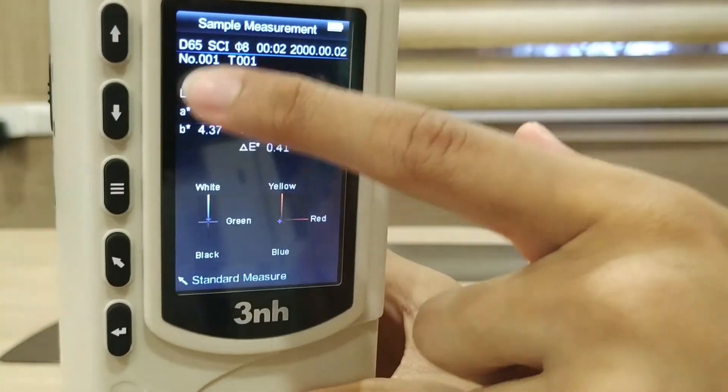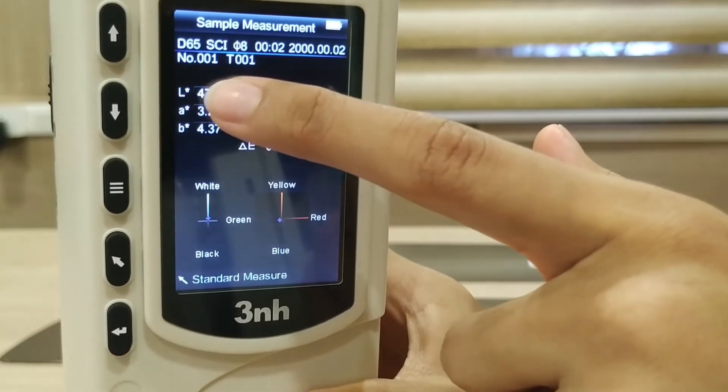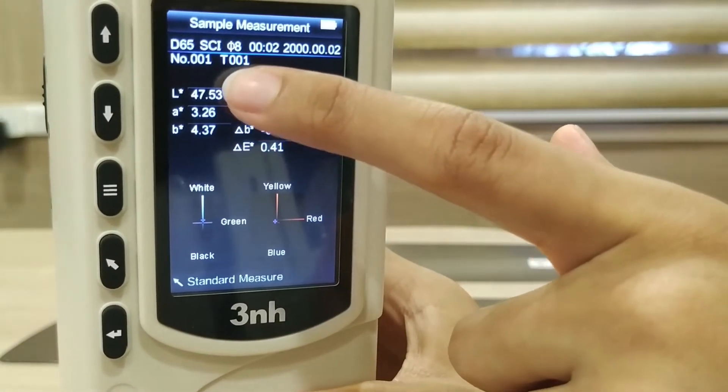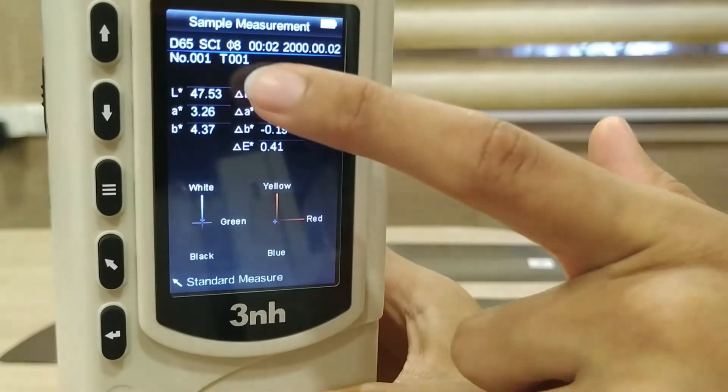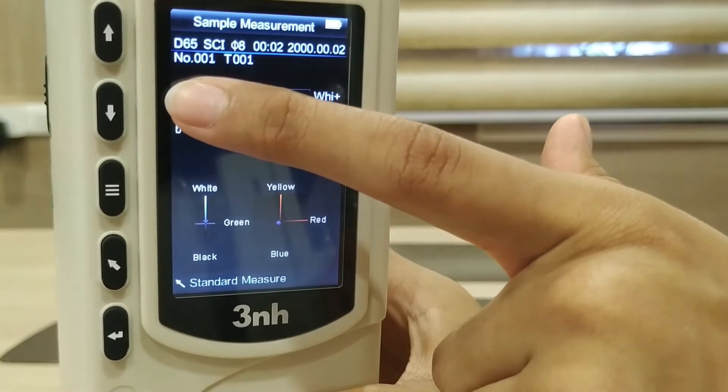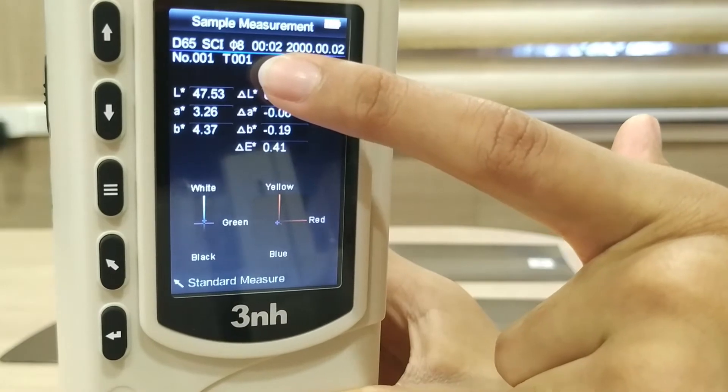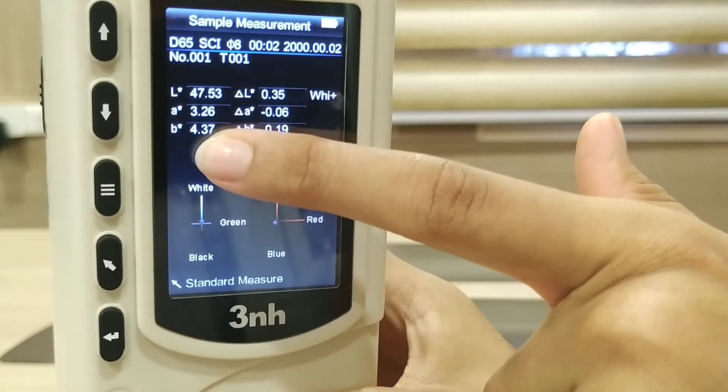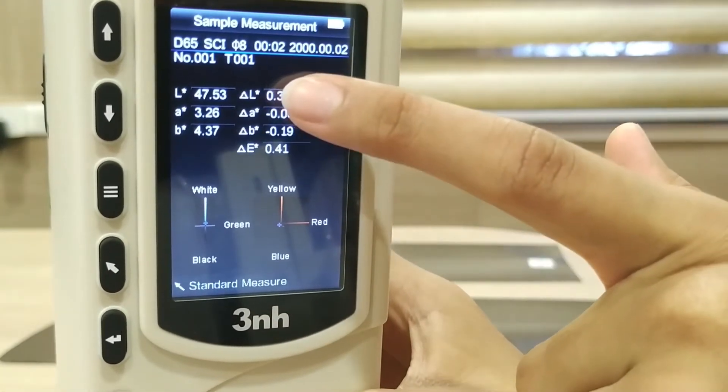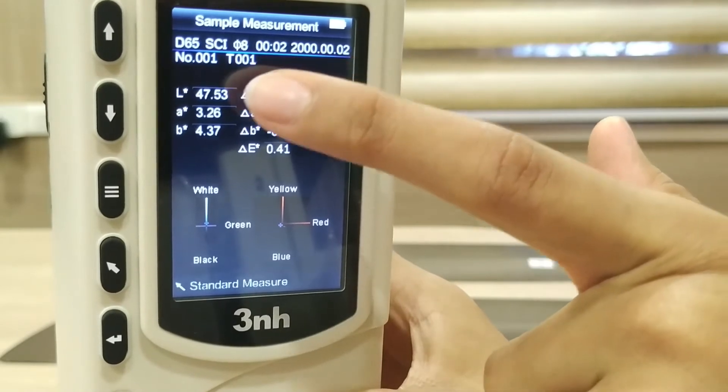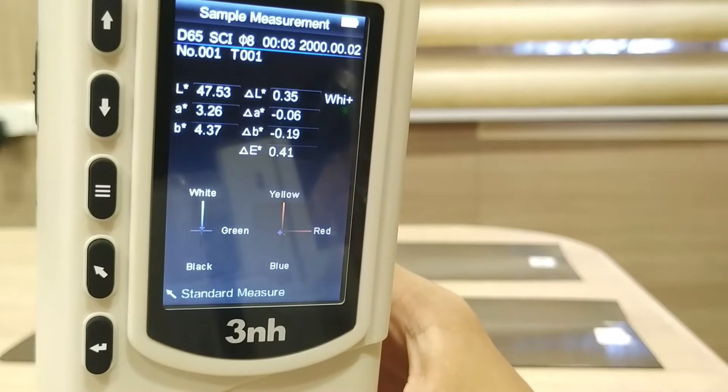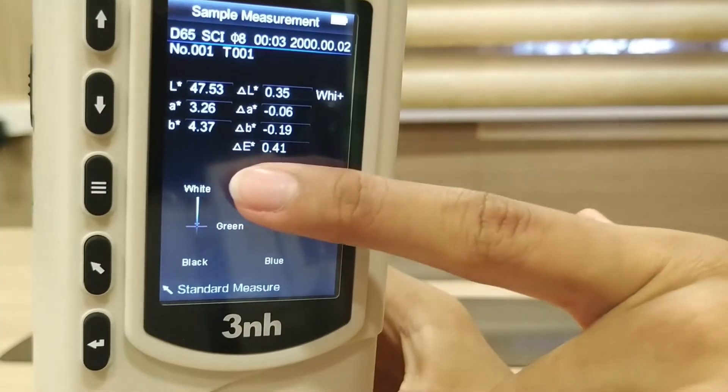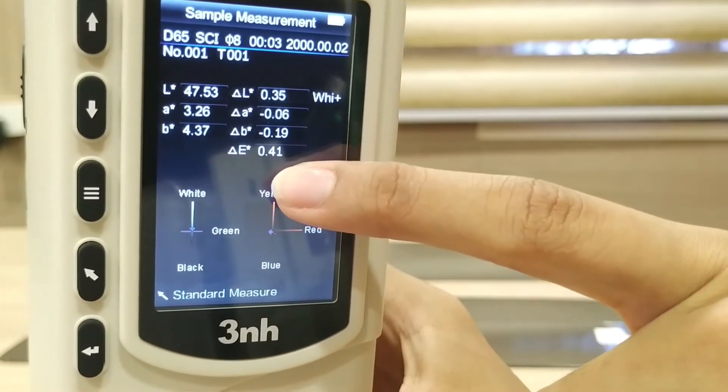Number 001 indicates sample number 1, and as I mentioned earlier, T001 indicates standard 1. So this is the first sample for the first standard. Here are the LAB values of our sample, and the delta values represent the difference between the sample and the standard. We look at the delta E value which is 0.41 in this case.